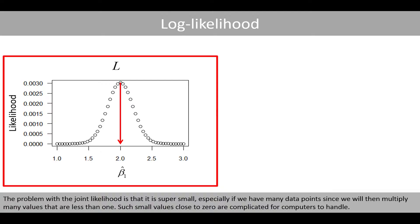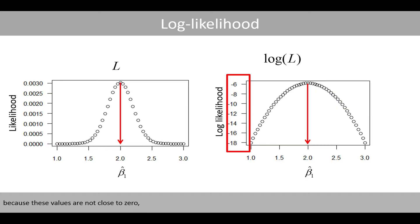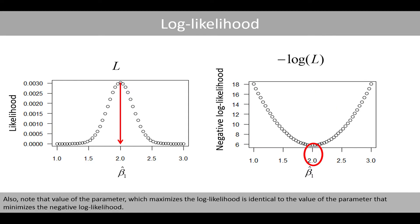The problem with the joint likelihood is that it is very small, especially if we have many data points, since we multiply many values that are less than 1. Such small values close to 0 are complicated for computers to handle. This is the reason why we usually instead work with the log-likelihood function, which generates the log of the likelihood, because these values are not close to 0. The value of the parameter that results in maximum likelihood is the same value that results in maximum log-likelihood. Also note that the parameter value which maximizes the log-likelihood is identical to the value that minimizes the negative log-likelihood.